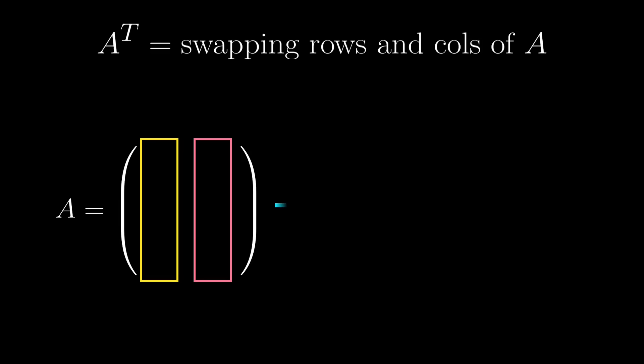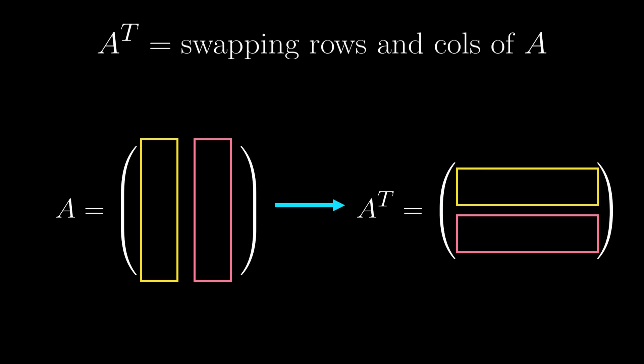A matrix transpose is just swapping rows and columns, right? You take a matrix A, turn its columns into rows, then the new matrix is called A transpose. But there is way more to it than just moving things around. In fact, we can define the transpose of a linear map without ever referring to the matrix at all.